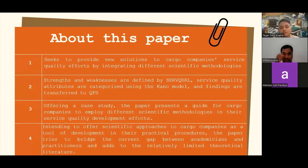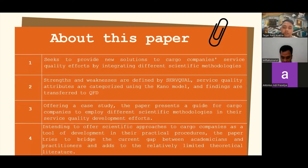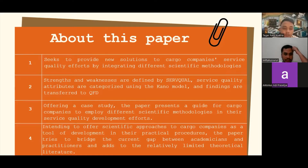A short overview of this paper: first, this paper seeks to provide new solutions to cargo company's service quality efforts by integrating different scientific methodologies. Second, strengths and weaknesses are defined by SERVQUAL, surface quality attributes are categorized using the Kano model, and findings are transferred to quality function deployment. Third, it offers a case study presenting a guide for cargo companies to employ different scientific methodologies in their service quality development efforts.